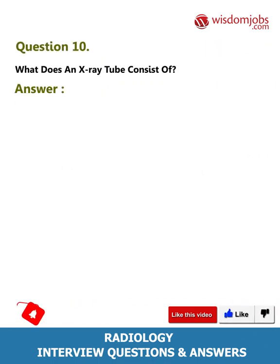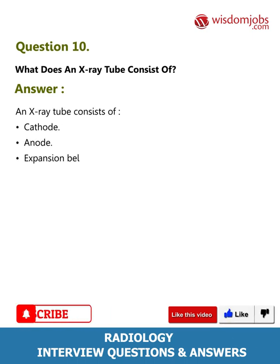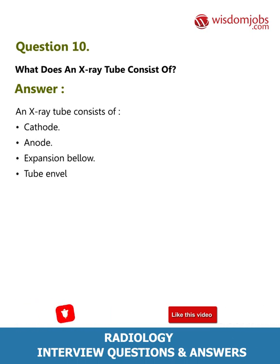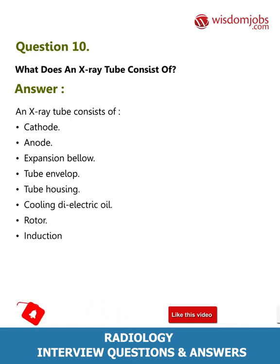Question 10: What does an x-ray tube consist of? Answer: An x-ray tube consists of a cathode, anode, expansion bellows, tube envelope, tube housing, cooling dielectric oil, rotor induction stator, and tube window.